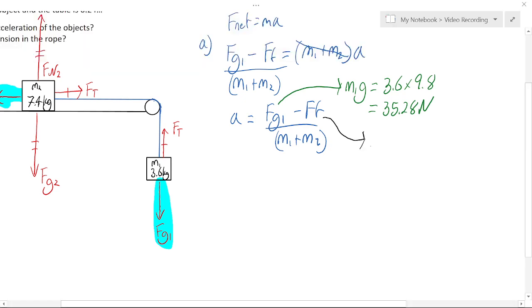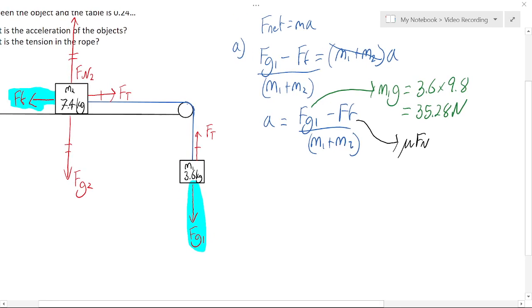Here's friction. Well, friction we know is mu Fn is the formula for friction. But there's only friction on the mass on the table, which has Fn2.